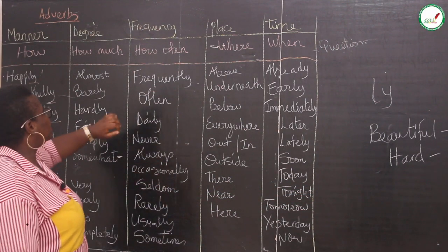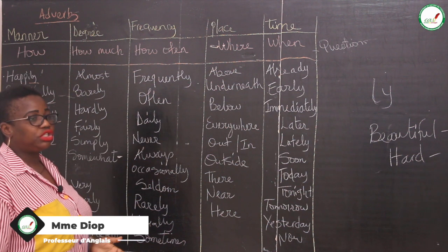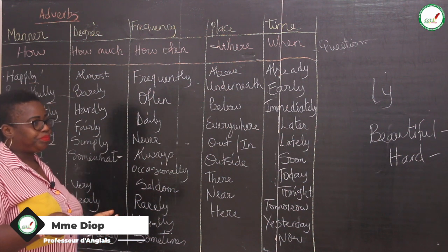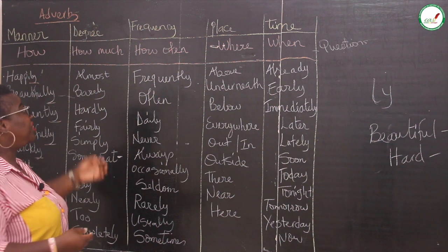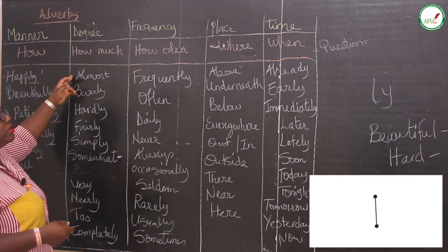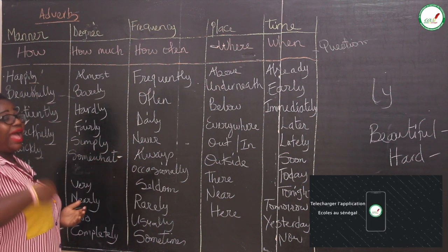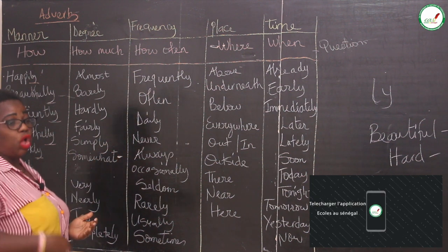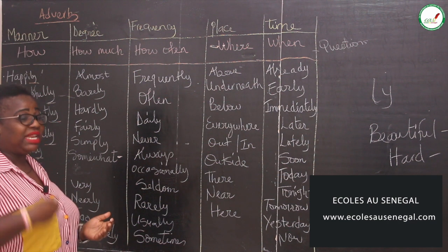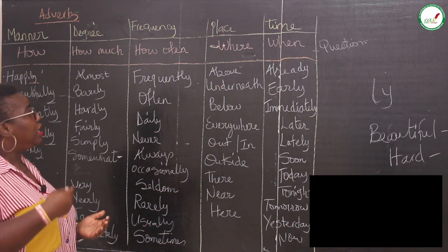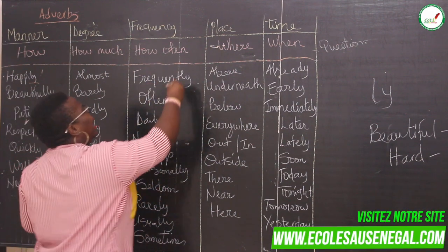And then we come to the third column which talks about the frequency. Frequency talks about how often. Remember, it's different from the degree that talks about to what extent. But this one talks about how many times — that's the frequency. Frequency is about how many times, how often you want it. If you can answer the question of how often, it talks about the frequency.